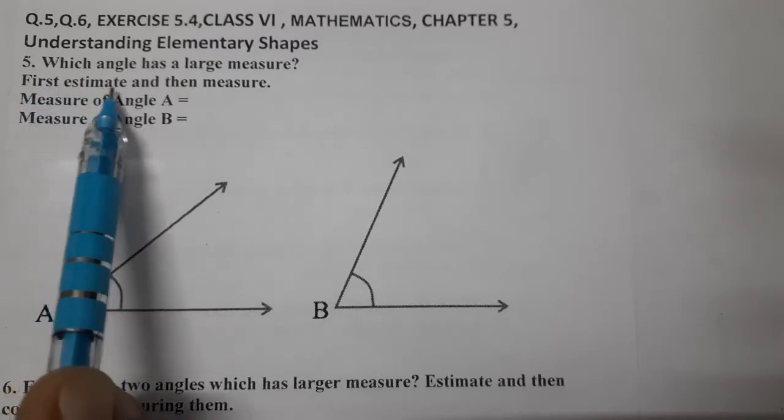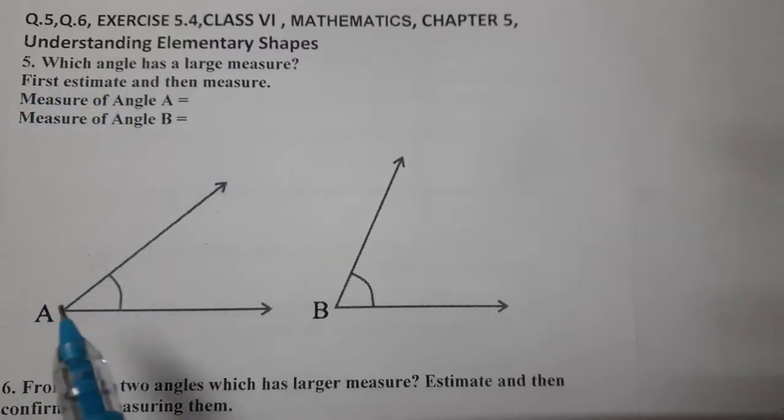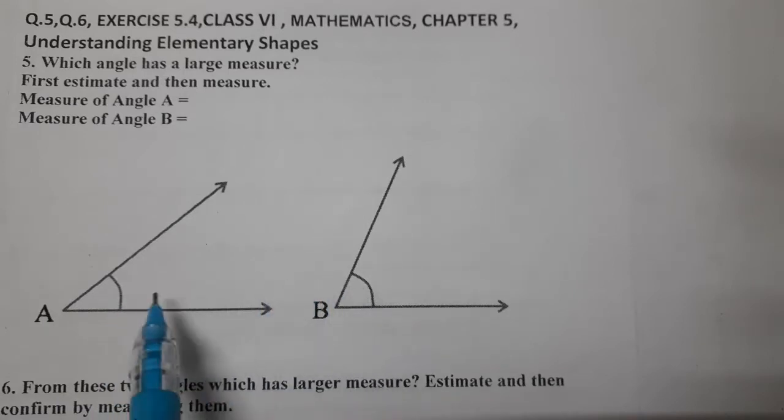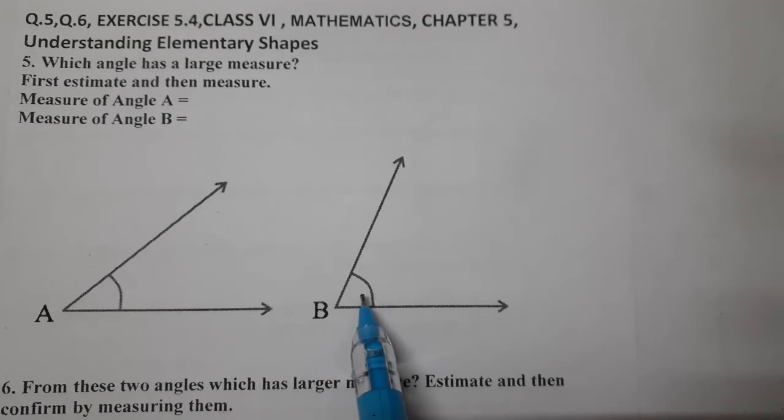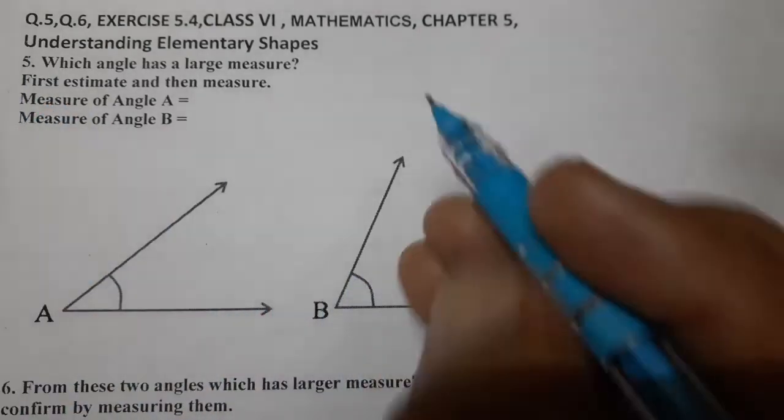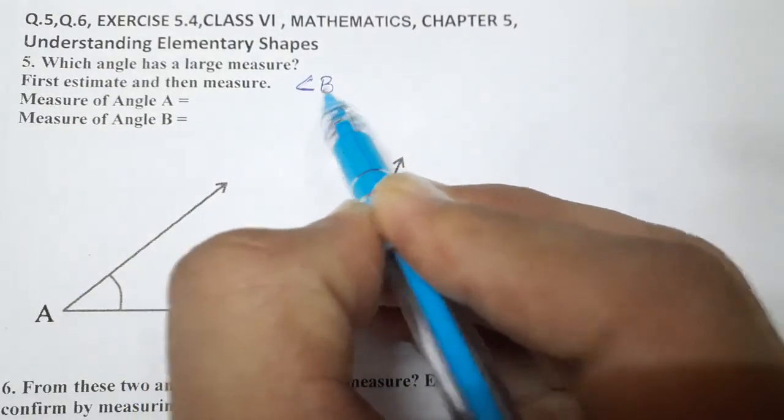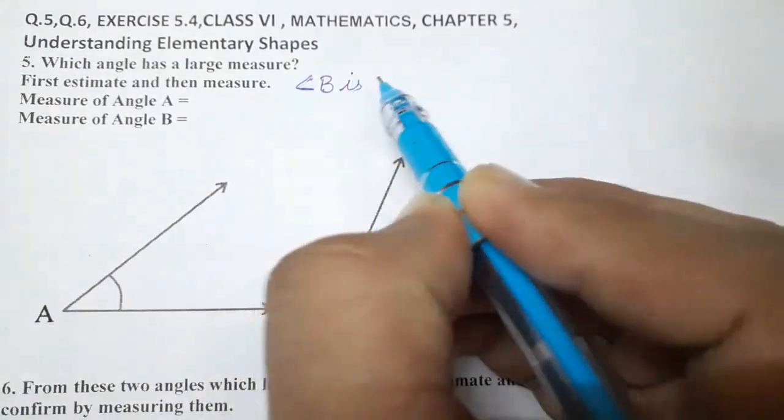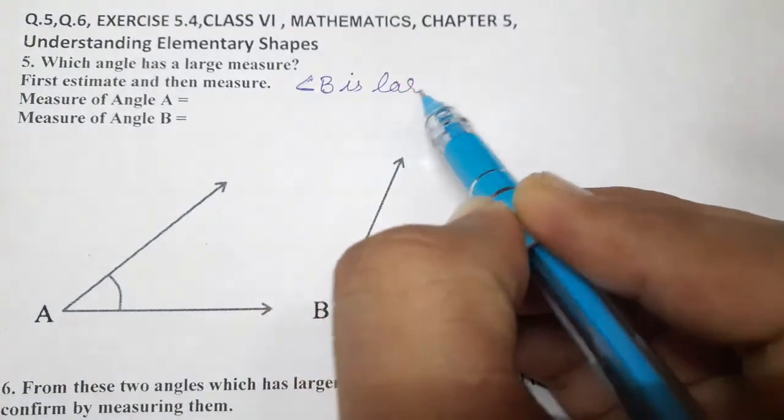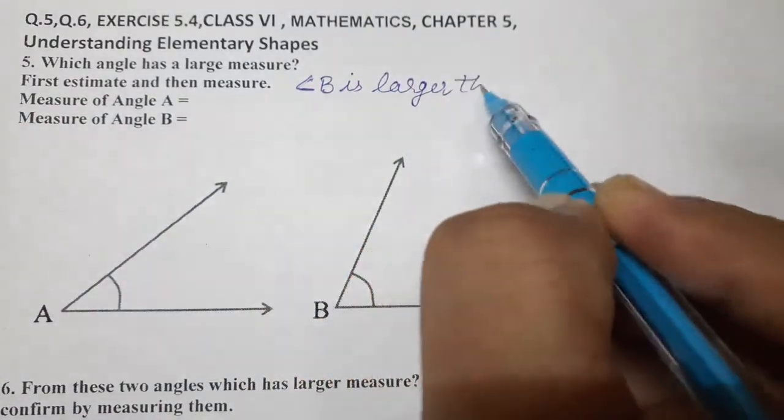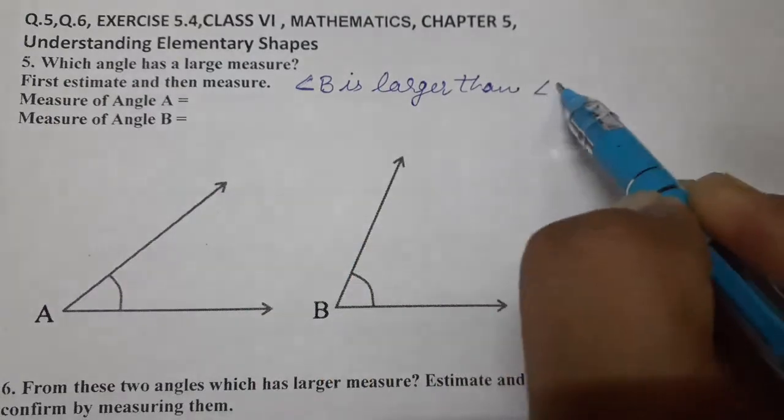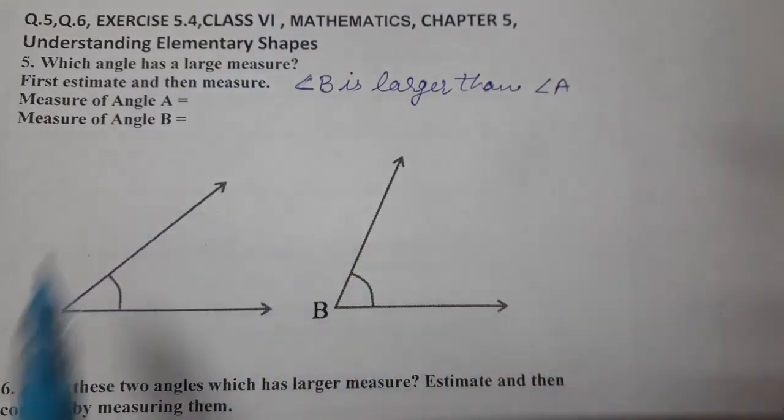First estimate and then measure. So first of all we have to estimate. Just by looking we can say which angle is greater. You can see by looking angle B is greater. So what is the estimation? Angle B is greater than angle A. Now we have to actually measure also, so let's measure using protractor.